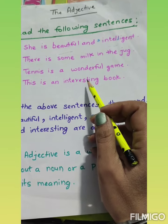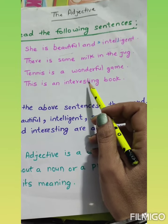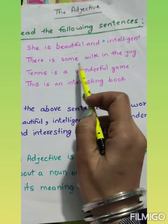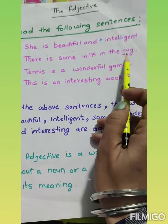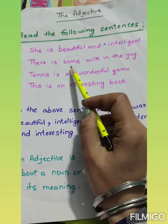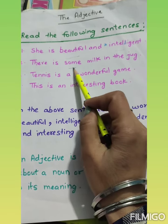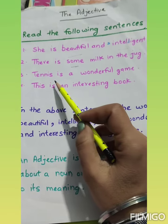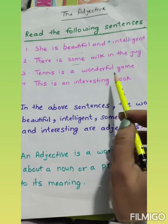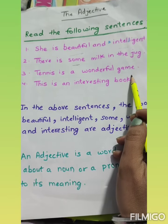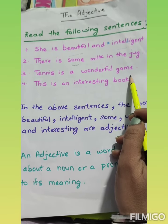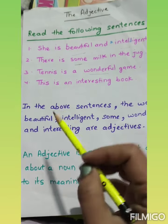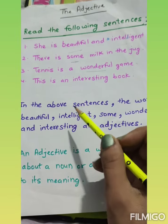Vishetion — it describes the quality of the noun. There is some milk in the jug. What is 'some milk'? 'Some' is the adjective. Tennis is a wonderful game. 'Wonderful' is the adjective.